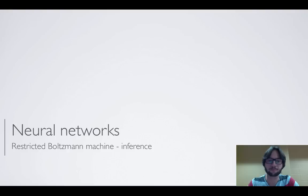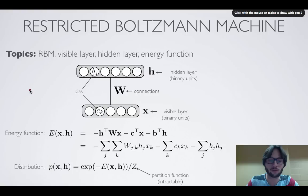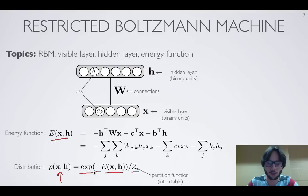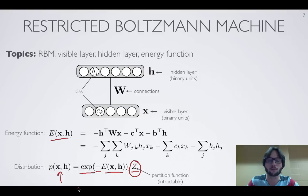We've seen in a previous video the definition of a restricted Boltzmann machine. It's an undirected graphical model with a given energy function, and we convert that into a probability distribution by exponentiating the negative energy and renormalizing. Computing this joint probability is generally going to be intractable because of the normalization constant, which requires an exponential sum over the numerator.